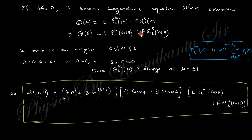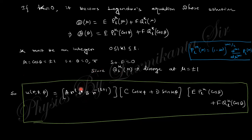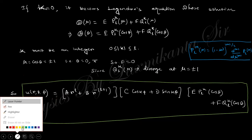The solution must be finite within its limits. Whether the Q part diverges or not depends on the boundary condition — constants F or E may be zero or both nonzero depending on the boundary conditions you need to check. The general solution of the Laplace equation in spherical polar coordinates combines the radial part (R), the azimuthal part (phi), and the theta part together.